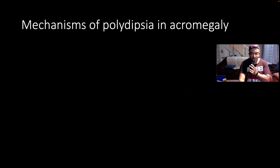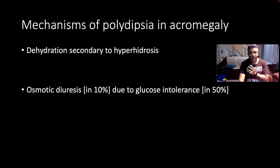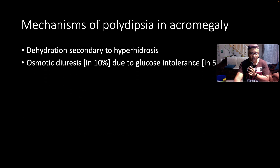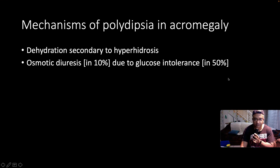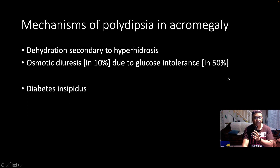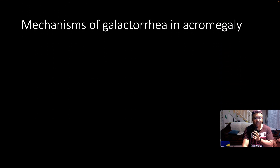Mechanisms of polydipsia in acromegaly: there could be dehydration secondary to hyperhidrosis, there could be an osmotic diuresis due to glucose intolerance, or there could be diabetes insipidus.